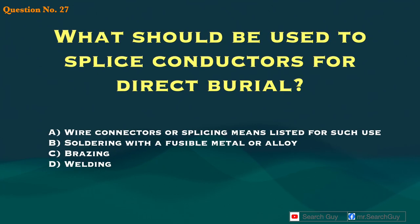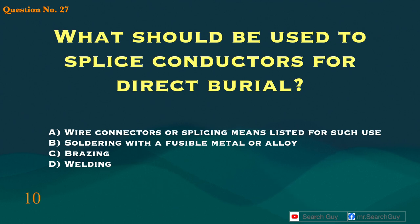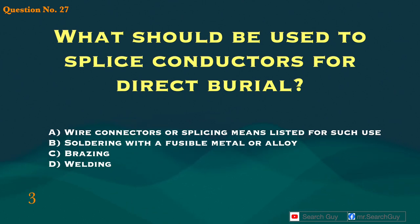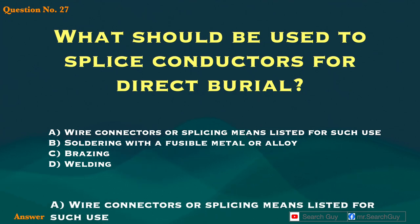Question 27. What should be used to splice conductors for direct burial? A. Wire connectors or splicing means listed for such use. B. Soldering with a fusible metal or alloy. C. Brazing. D. Welding. Answer: A. Wire connectors or splicing means listed for such use.